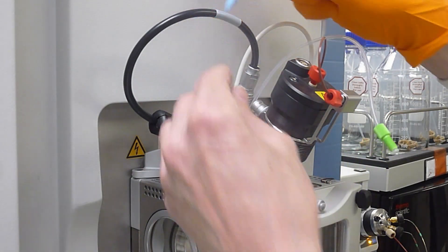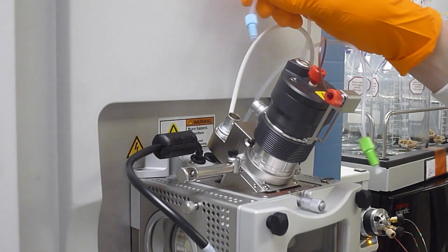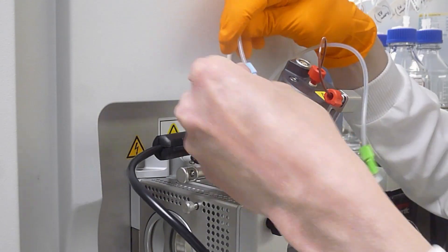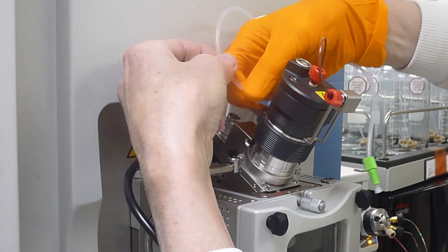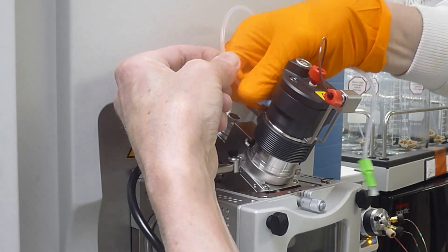Next you can fit the two gas tubes. You might want to move the heater cable out of the way first. Fit the blue tube and the green, trying not to get them cross-threaded.